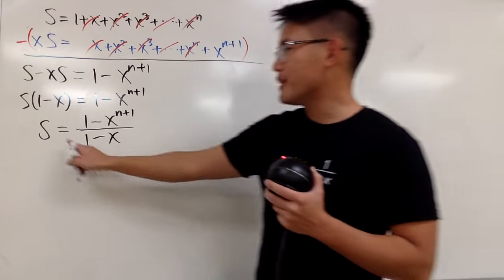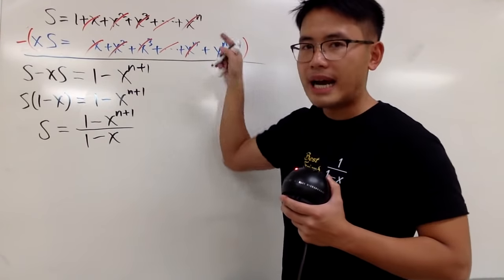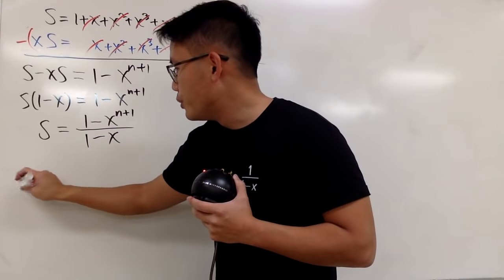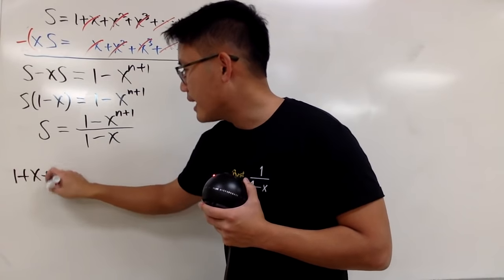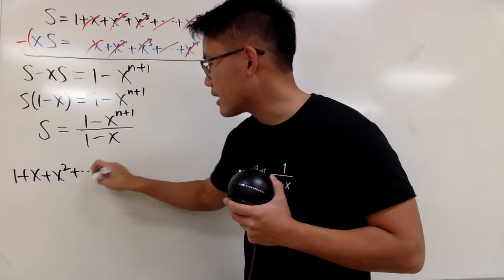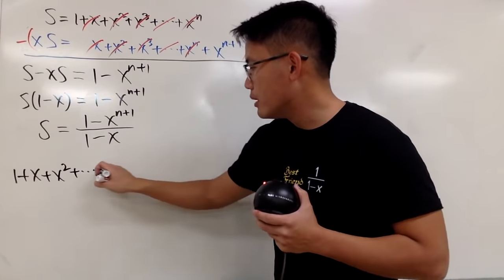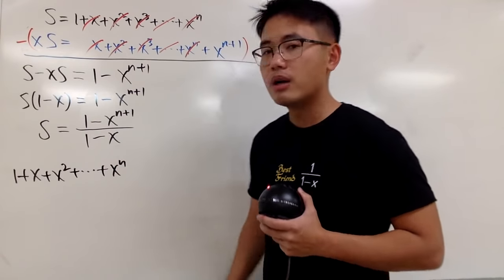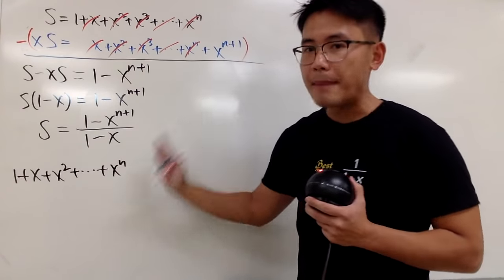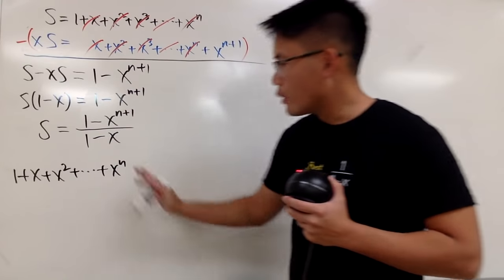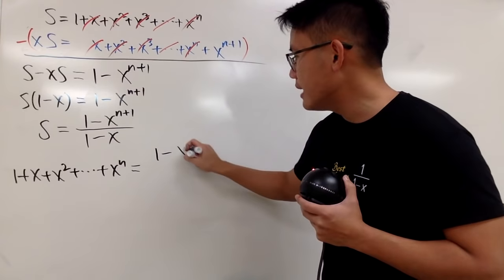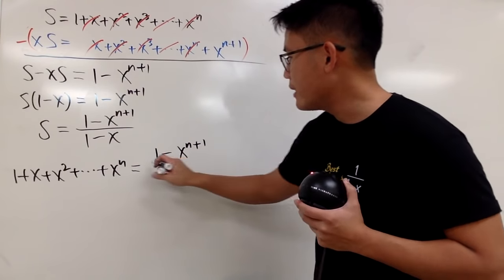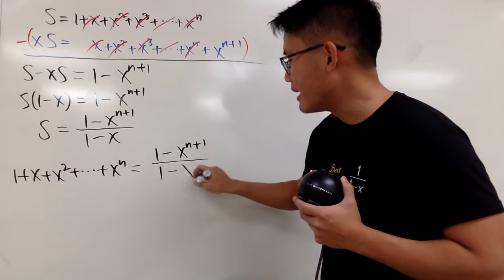And what we're saying is that, don't forget, S is equal to all that. So I will tell you guys, we pretty much have 1 plus x plus x squared plus dot dot dot, up to x to the nth power. Remember, this right here, we stop at x to the nth power. When you do that, you end up with this, namely 1 minus x to the n plus 1 over 1 minus x.